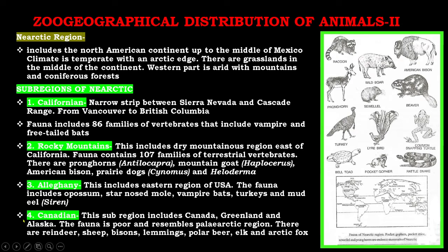Number four is the Canadian sub-region, which includes Canada, Greenland, and Alaska. The fauna is poor and resembles the Palearctic region. There are reindeer, sheep, bison, lemmings, polar bear, elk, and Arctic fox.